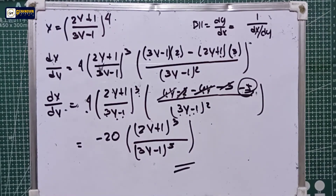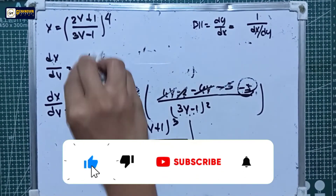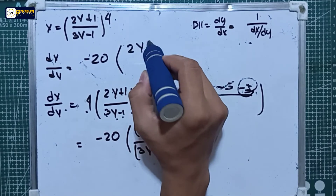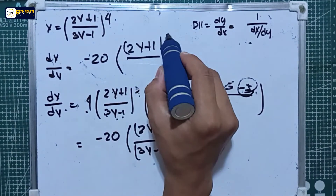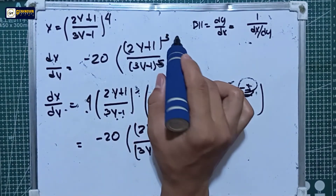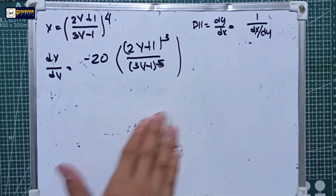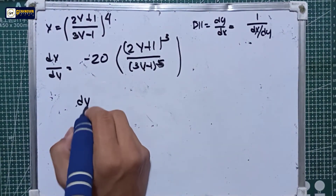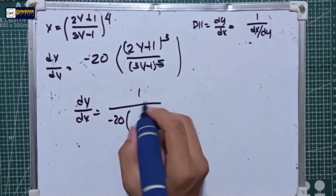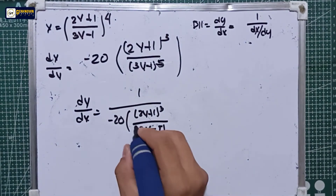So the simplified form of dx/dy is negative 20 times (2y + 1) cubed all over (3y − 1) raised to the 5th power. Under the inverse function rule, dy/dx is equal to 1 over dx/dy, so it is equal to 1 over negative 20 times (2y + 1) cubed all over (3y − 1) raised to the 5th.